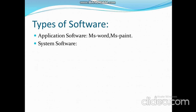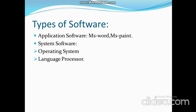System software also provides a platform for running application software. System software can be classified into the following categories: operating system, language processor, device drivers, and utility software.